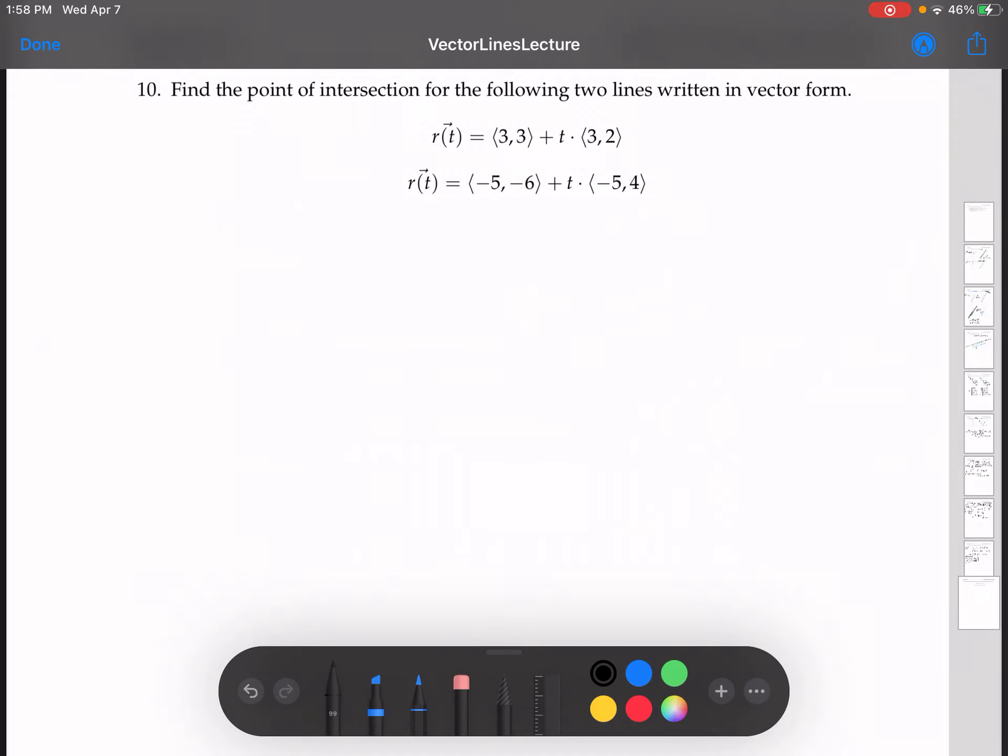Here we have two lines written in vector form, and we want to find the point of intersection. So essentially what we're trying to do is we have one of these describes some line, another one describes some other line, and we want to find that point where they intersect.